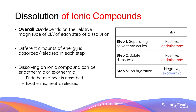Just a brief revision — dissolution of an ionic compound can either be endothermic or exothermic. Endothermic means the dissolution has a positive change in enthalpy, while exothermic means the dissolution has a negative change in enthalpy. The overall enthalpy change depends on the relative magnitude of enthalpy change of each step of dissolution. The steps of dissolution were covered in the previous video titled Processes Involved in Dissolution, so it is recommended that you watch that video first before this one.